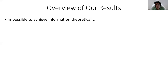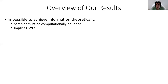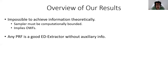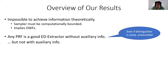Here are the results we show. First, we show that unfortunately you cannot achieve this notion information-theoretically — in contrast to standard seeded extractors, which are information-theoretic. Here we need computational assumptions. In fact, the sampler itself must be computationally bounded. The existence of such extractors implies one-way functions, even for the weakest notion without auxinfo. Then we show a positive result: in the setting without auxinfo, it's fairly easy to construct these extractors. Any pseudorandom function with a sufficient level of security is a good extractor in this setting. The positive result is very strong — it holds even if the distinguisher is computationally unbounded, so the output is statistically close to uniform, as long as the sampler is computationally bounded.